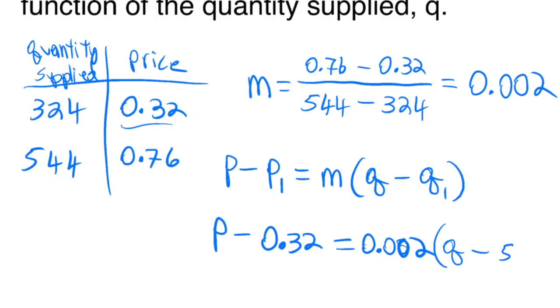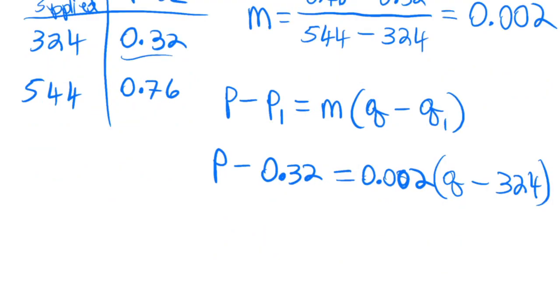So then I get this equation with P and Q as my unknowns. I can put it in slope-intercept form by solving for P. I distribute and get 0.002Q minus 0.648 equals P minus 0.32.